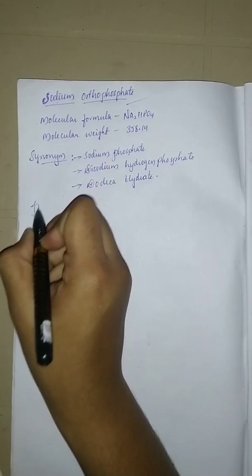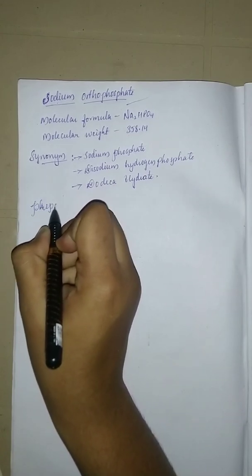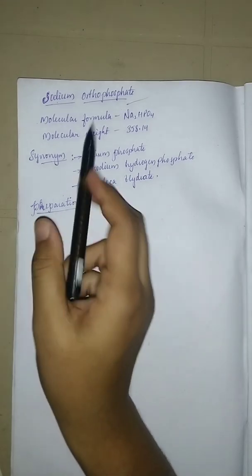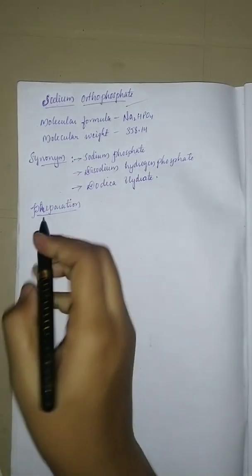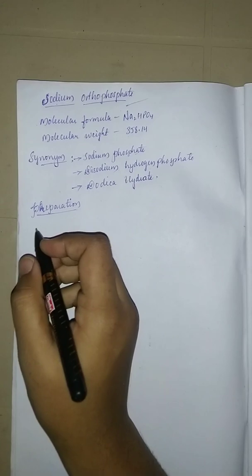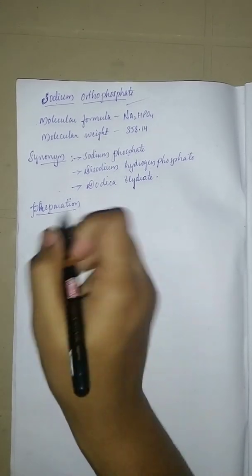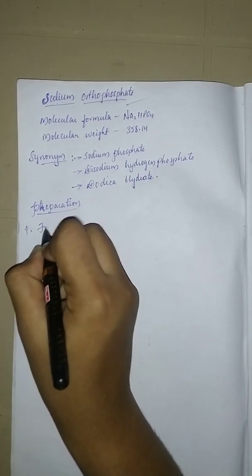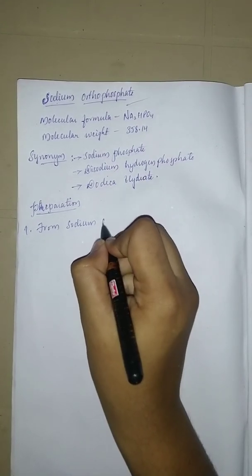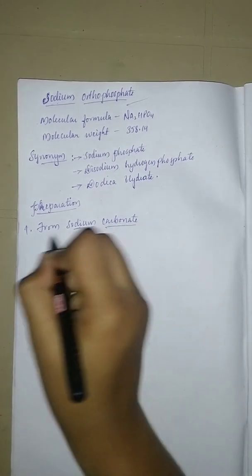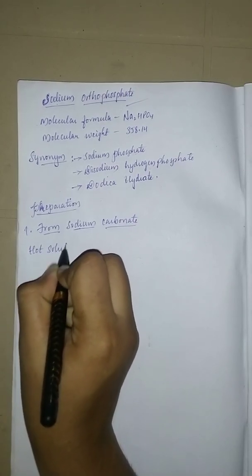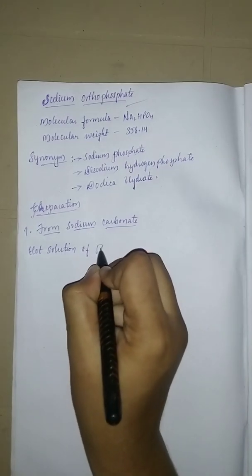Let us see the preparation of sodium orthophosphate. It is prepared by two methods. The first method is from sodium carbonate — specifically from a hot solution of sodium carbonate and phosphoric acid.